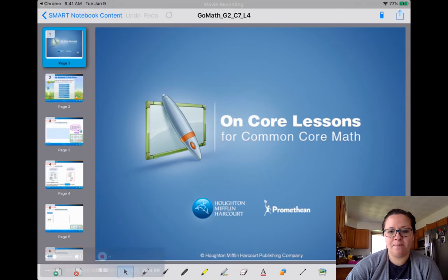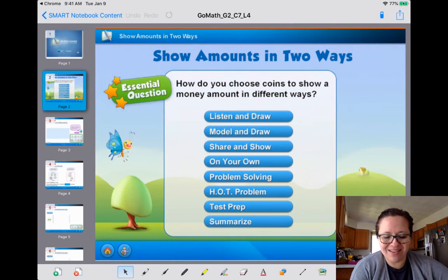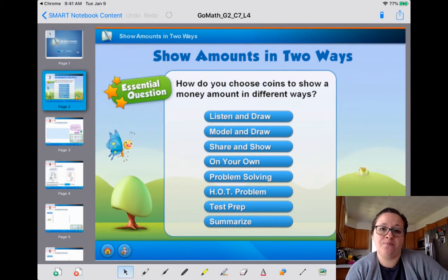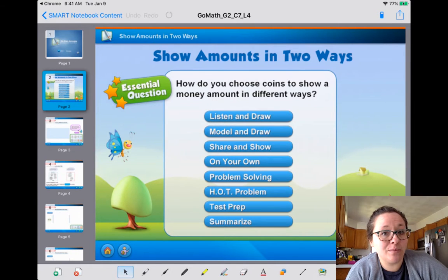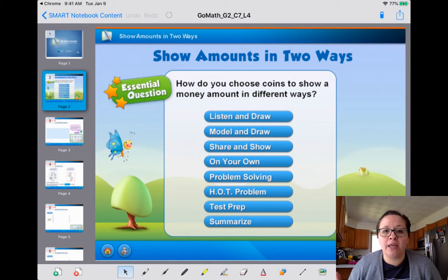What is going on, peeps? Okay, so we are today thinking about showing how to count coins in different ways or showing the same amount of money two ways. Like if I have 100 cents or $1, I could show that with four quarters or I could show that with 10 dimes, right? There's different combinations to show the same amount of money.